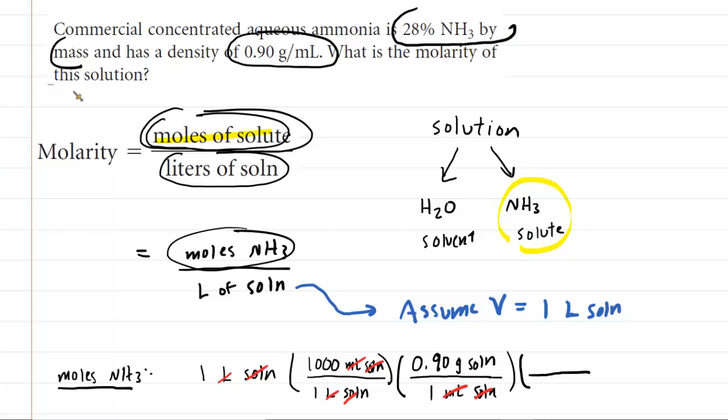The next conversion comes from this percentage of ammonia by mass. We know that it's 28% ammonia by mass. One way of representing that would be to say that there are 28 grams of NH3 for every 100 grams of solution, because 28 out of 100 is 28%. By multiplying there, the grams of solution will cancel, and now we have grams of ammonia. We are one step away, we need the moles.